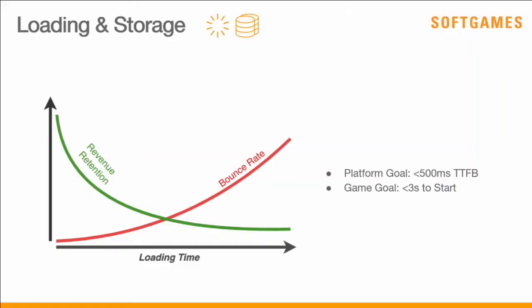First of all, we've heard this already — it's the loading problem, loading the games. The graph is pretty simple and everybody knows this when it comes to monetization or retention: users drop off quite quickly. Our goal is for the platform to deliver the first bytes within 500 milliseconds and get users into a game within three seconds, which is quite challenging. It sounds easy but it's quite hard to get there.